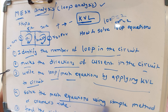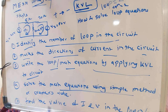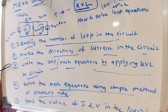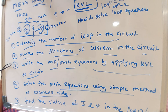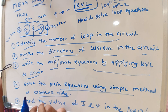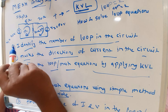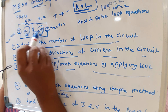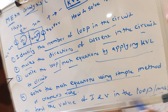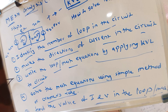After writing the loop equations, we solve the mesh equations using either a simple method or Cramer's Rule. Many students will have studied Cramer's Rule in mathematics. After applying Cramer's Rule, we find the values of I1 and I2 — the first and second loop currents — and then find the values of current I and voltage V in the mesh.